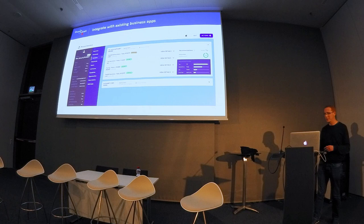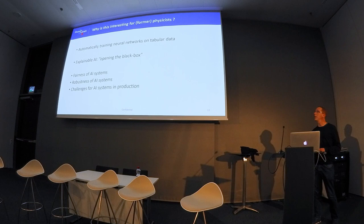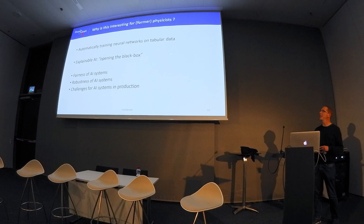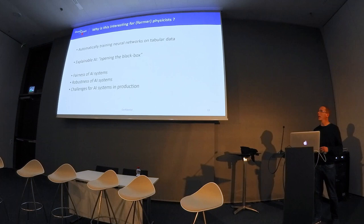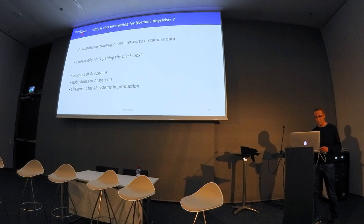Why is this interesting for a former physicist? The first key point is automatically training neural networks on tabular data — two things: tabular data, and automatic, since our users don't write code. The second point, which we've touched on today, is what's referred to as explainable AI, trying to open the black box and make sense of what's going on underneath. We also face challenges around fairness, robustness, and production when using real-world data.